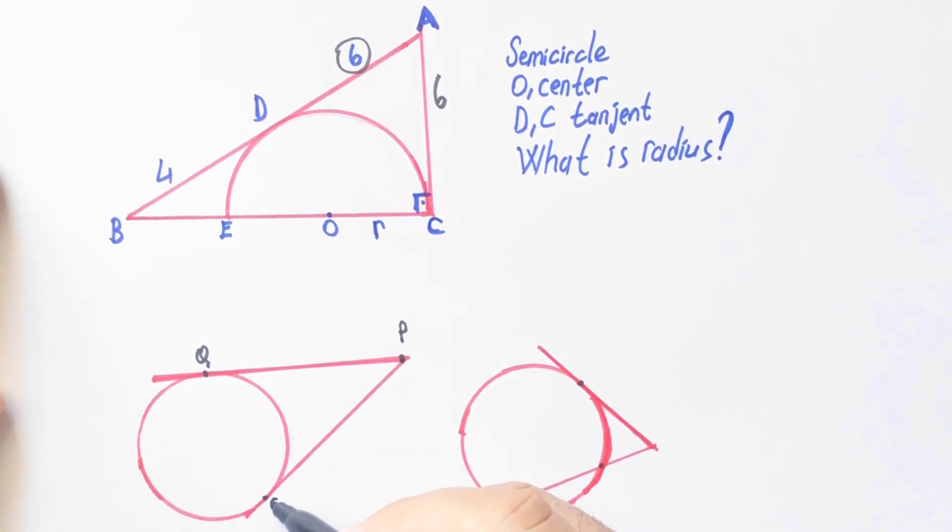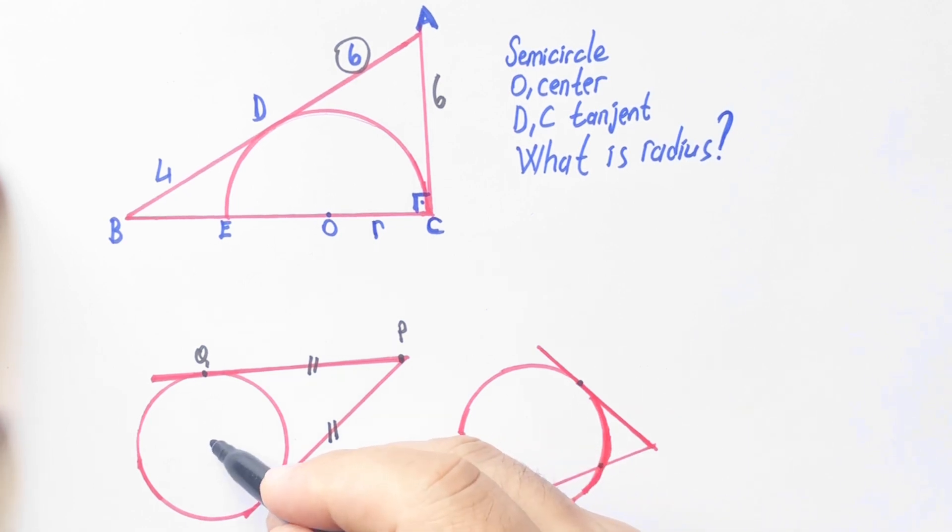Let's call here P, Q, S points. If we have two segments which are tangents, Q is the point like this, and if we connect here this angle will be 90 degrees.